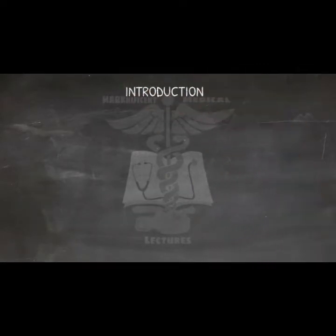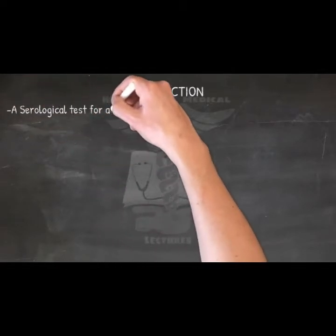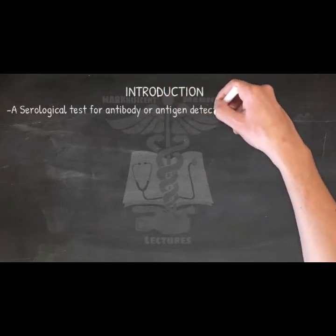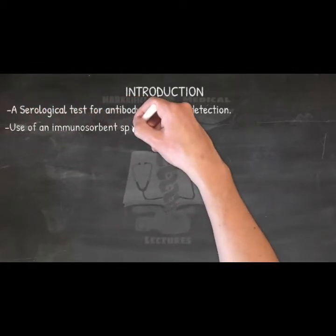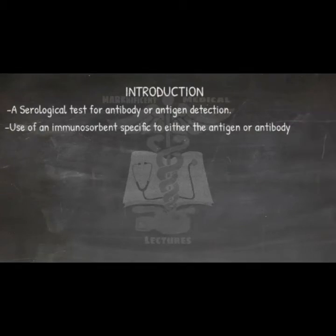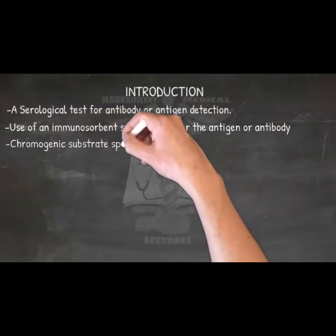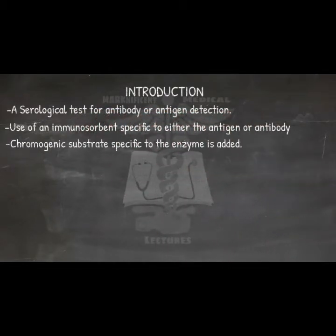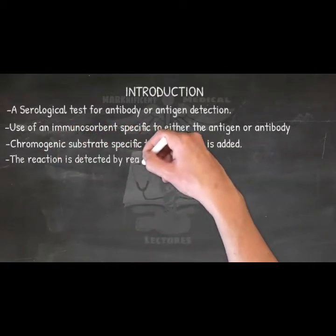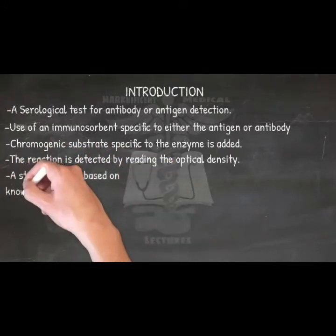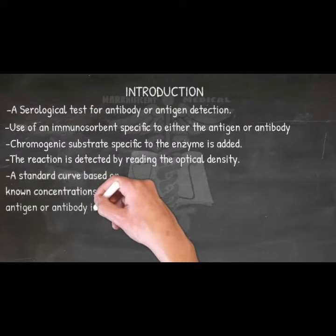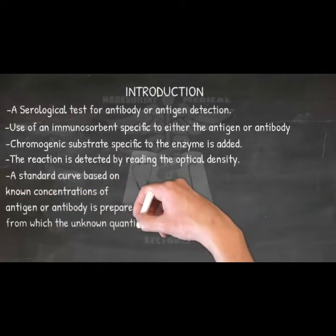Introduction. The enzyme-linked immunosorbent assay ELISA has become one of the most widely used serological tests for antibody or antigen detection. This assay involves the use of an immunosorbent specific to either the antigen or antibody. Following the antigen-antibody reaction, a chromogenic substrate specific to the enzyme is added, and the reaction is detected by reading the optical density. Usually, a standard curve based on known concentrations of antigen or antibody is prepared, from which unknown quantities are calculated.